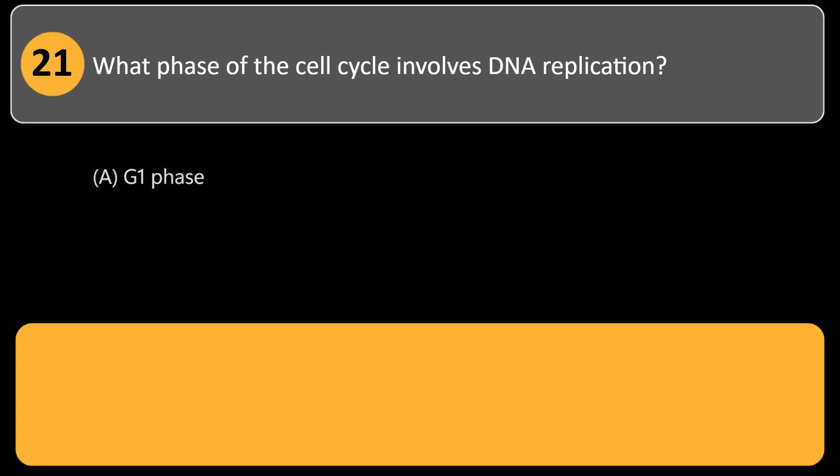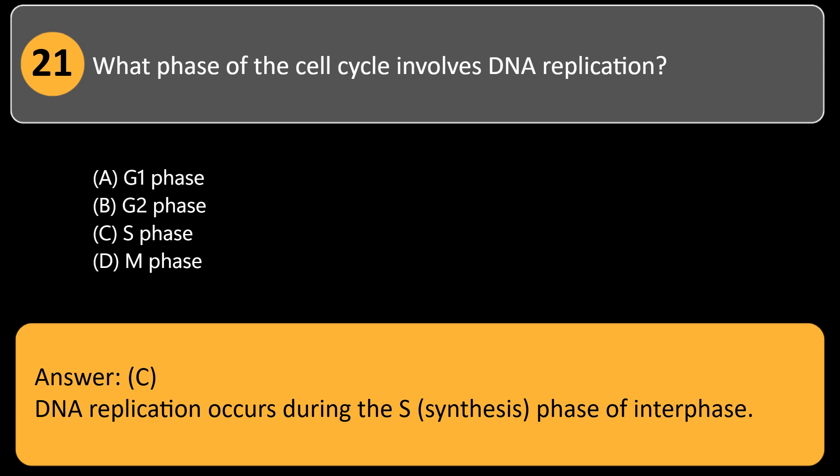What phase of the cell cycle involves DNA replication? A. G1 phase, B. G2 phase, C. S phase, D. M phase. Answer: C. DNA replication occurs during the S (synthesis) phase of interphase.